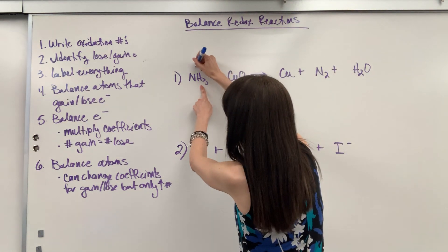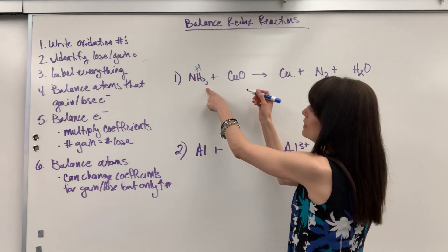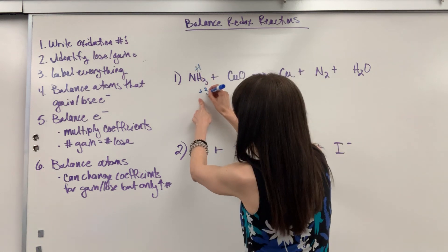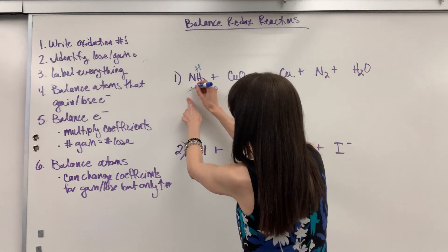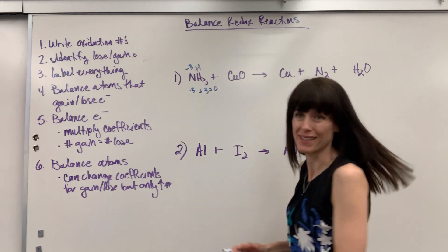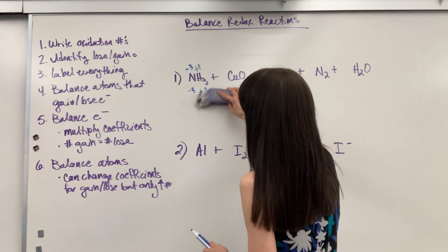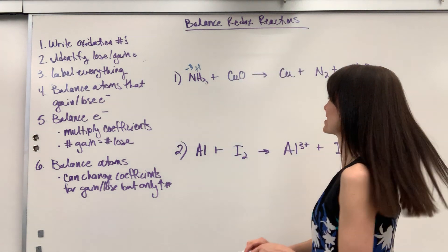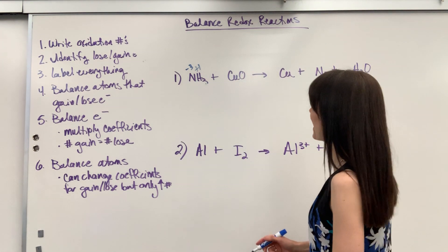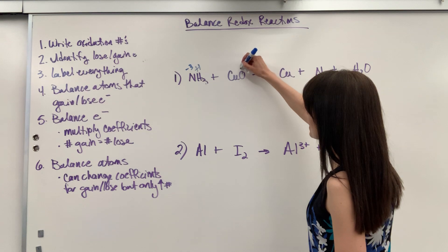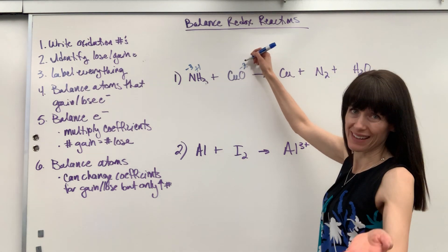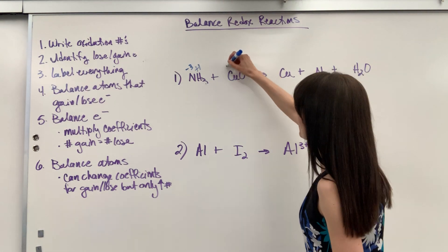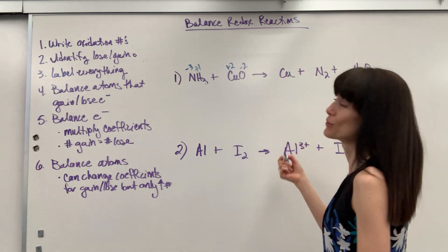So hydrogen is a plus one. Plus one times three that would give me a three. It has to equal the net charge of zero, which means nitrogen must be a minus three. These next ones I'll do just a little bit faster. So oxygen is a minus two except for in peroxides, which means copper must be plus two.